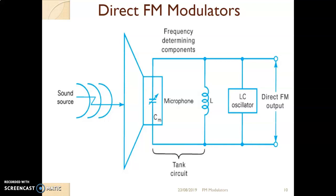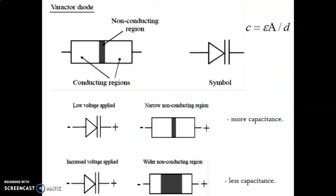The concept is: Fc will be generated when no modulating signal is present. When the modulating signal comes, deviation will be produced and that deviation will be added or subtracted to the carrier frequency. The first circuit we are going to see under the direct FM modulator is the varactor diode FM modulator. We will first understand the principle of working of the varactor diode.